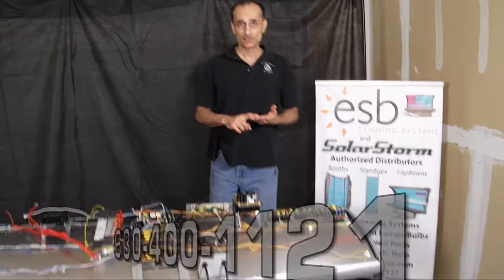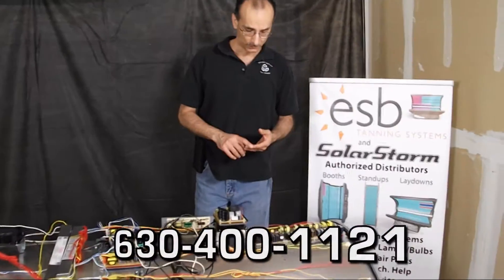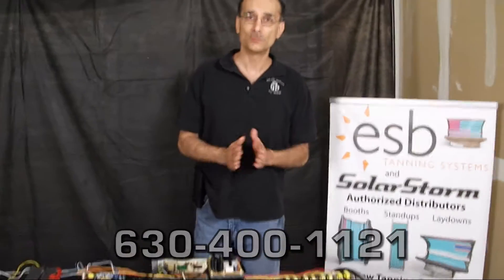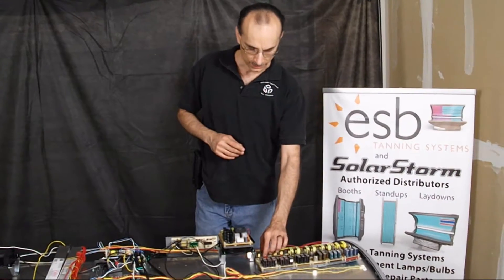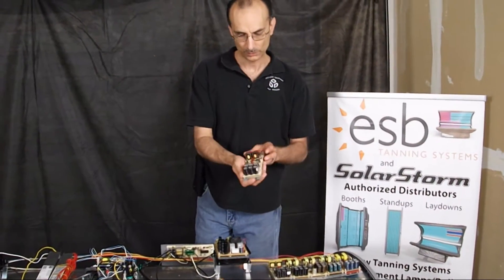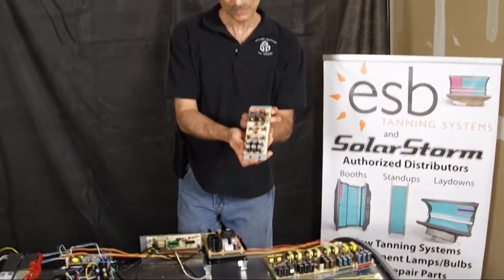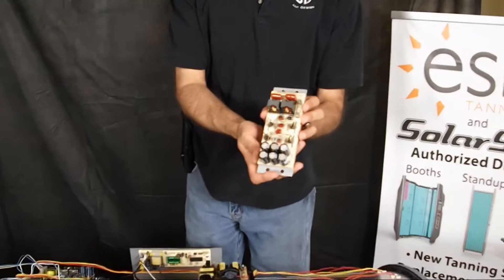First, what I'd like to describe is the fact that ESB has used several ballasts over the years. Starting in the late 90s, roughly 97, 98, they started using a ballast that looked like this. This was the first 10-pin ballast.